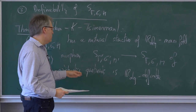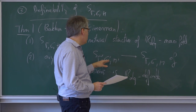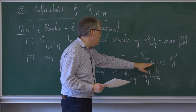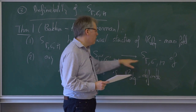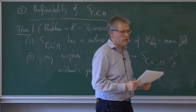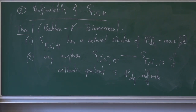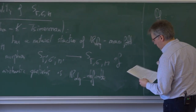A morphism of arithmetic quotients means it comes from a morphism of algebraic groups from G' to G, mapping Γ' to Γ, and mapping M' to a conjugate of M by a rational element. Let's give the idea of the proof, dealing essentially with part one.